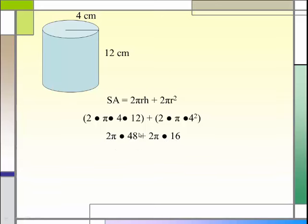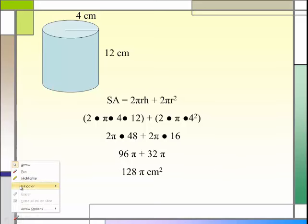48 times 2 plus 16 times 2 would give me 96π plus 32π. Now you add these together just like you were adding them like x's. 96π plus 32π would be 128π. Sometimes your answers are going to ask you to leave your answer in π form. That means that would be your final answer.